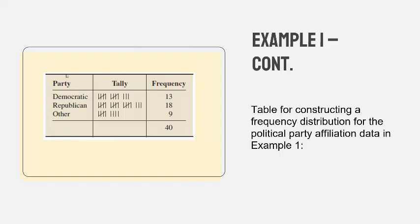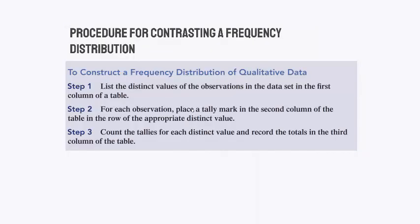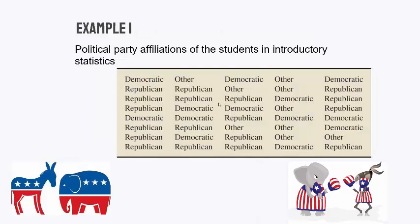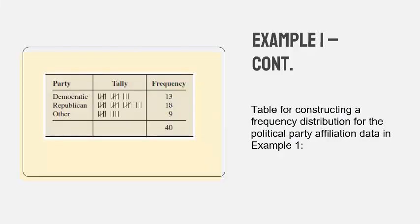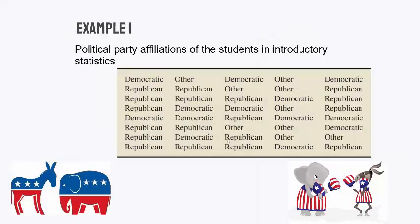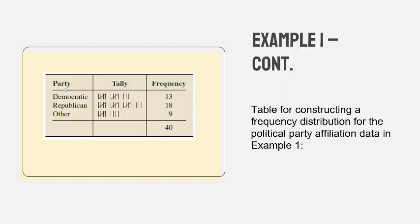The tally column is not really important — what's important is the result. In my introductory stats class, there were 13 Democrats, 18 Republicans, and 9 students who classified as Other. I took the raw data and put it into a nice consumable table showing Democrat, Republican, Other with counts of 13, 18, and 9.